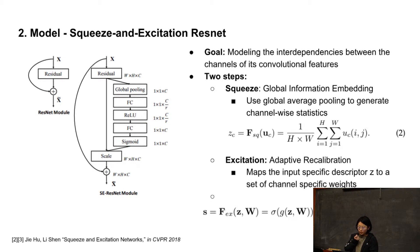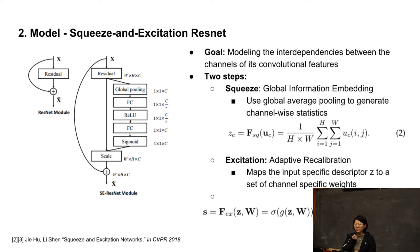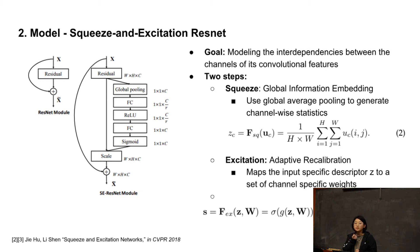We also found another paper about the Squeeze and Excitation network. The idea is that it has two phases. During the squeeze phase, it uses global average pooling to generate channel-wise responses. During the excitation phase, it maps the aggregated input from the previous phase to a set of channel-specific weights. After this, we rescale the transformation input to get the final output of the SE block. As you can see on the right side, we apply the SE block onto the ResNet to see if we can get better performance.